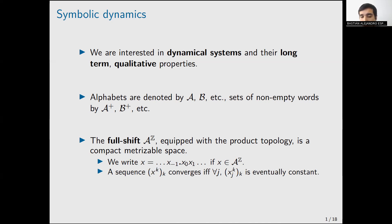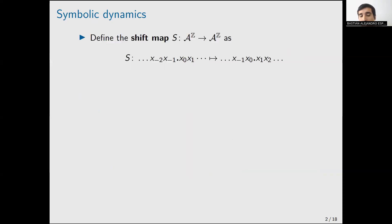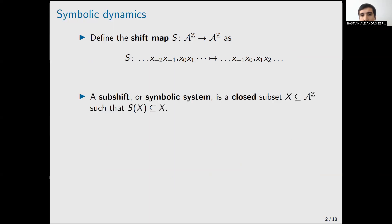We write points in the full shift as bi-infinite words, with a dot indicating the zero coordinate. A sequence of points x_k converges if and only if it converges pointwise — meaning that for each coordinate, the sequence restricted to that coordinate is eventually constant. The dynamics in symbolic dynamics comes from the shift map, which simply shifts points one position to the left. The shift map is an automorphism of the full shift. A subshift is a closed subset of the full shift that is invariant under the shift map.